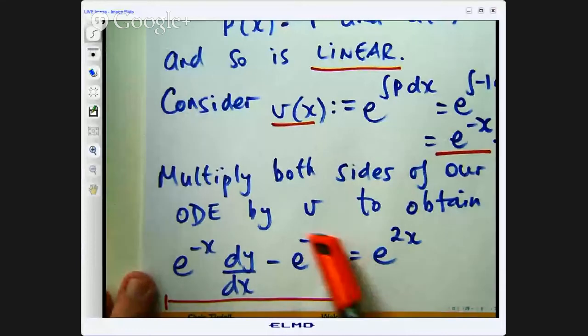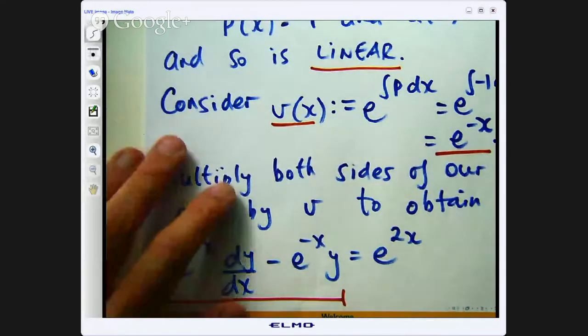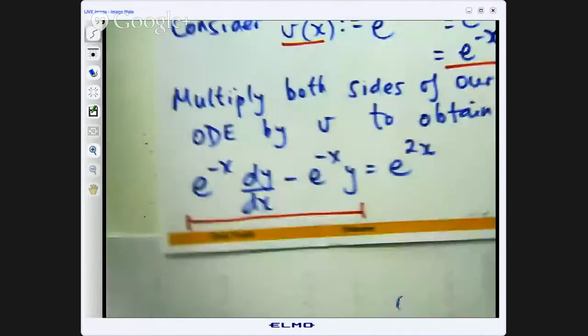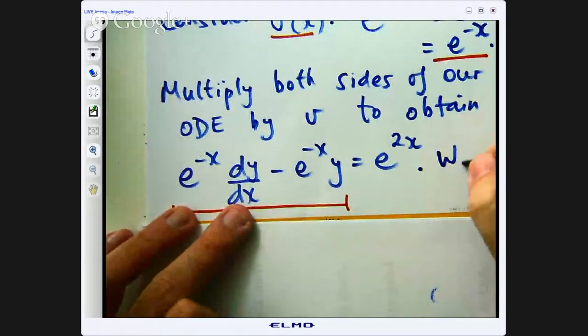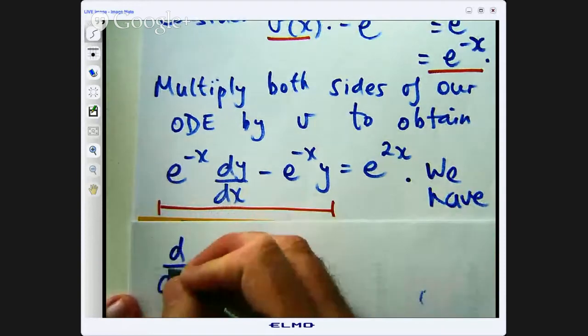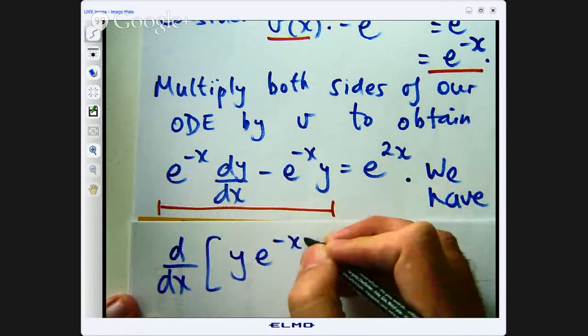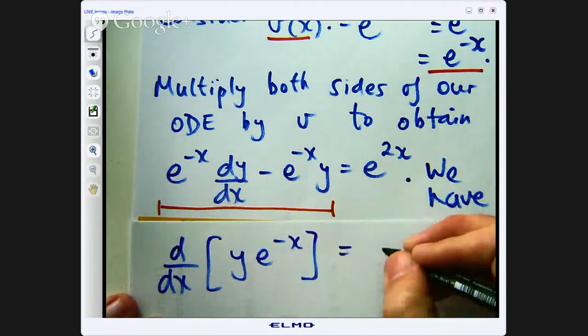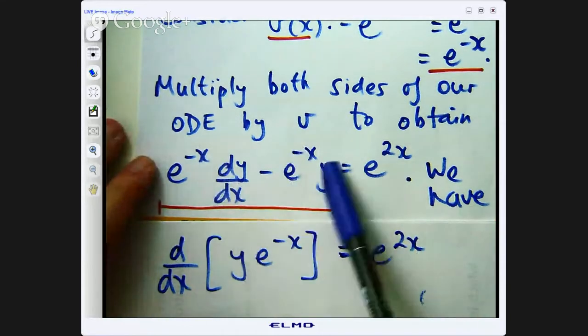Now if you look closely at this, this is actually the derivative of the special product that I was telling you about. So we have the following. The left hand side is the derivative of this. Now you might go well hang on how did you go from here to here? Well actually you can work backwards here. If y is a function of x and you differentiate this.